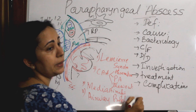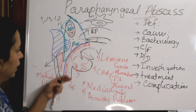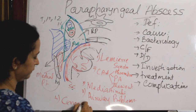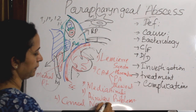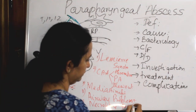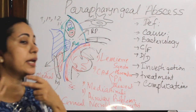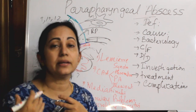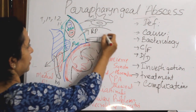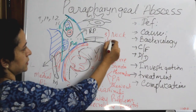Further complications include cervical necrotizing fasciitis, which can cause pharyngeal perforation internally, and descending necrotizing fasciitis of the neck externally. The infection can also spread to the retropharyngeal space, leading to a retropharyngeal abscess with all its associated complications.